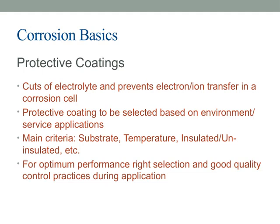Starting with protective coatings — these coatings act as a barrier, cutting off the electrolyte and preventing the transfer of electrons and ions that drive corrosion within a corrosion cell. By doing so, they significantly slow down or even stop the corrosion process. When choosing a protective coating, it's important to consider the environment and the specific service conditions the material will face. Factors like temperature, whether the surface needs to be insulated or uninsulated, and the overall exposure all play a crucial role in selecting the right coating. Proper selection is key, but equally important is maintaining good quality control practices during application, ensuring the coating adheres properly and provides the intended protection over time.